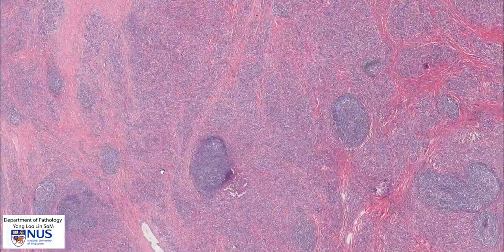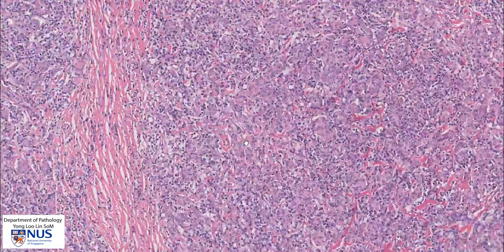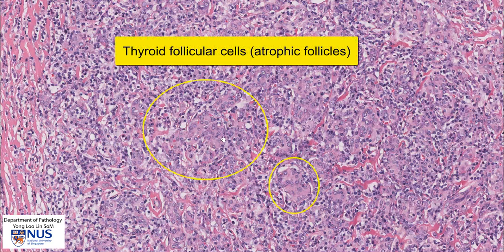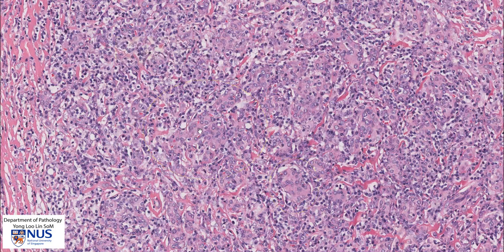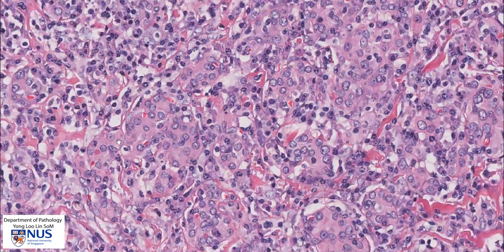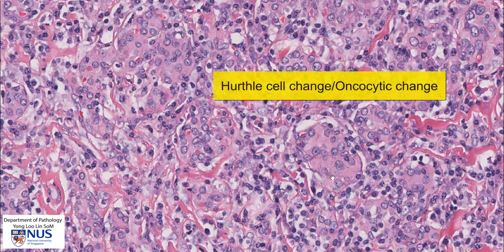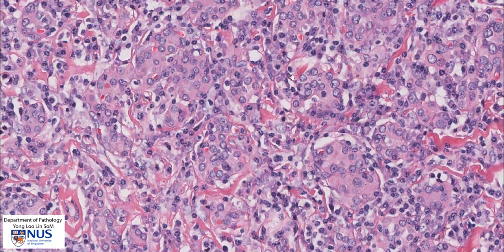Looking at these more diffuse areas, we can see several different cell types. These pinker nests of cells are follicular cells. The thyroid follicles are atrophic with hardly any colloid, and the follicular cells themselves exhibit some interesting features. The cells are enlarged and contain abundant pink granular appearing cytoplasm — this is known as hurtle cell change or oncocytic change. In between the follicular cells, we see a lot of very small cells with rounded nuclei. These are all infiltrating lymphocytes.